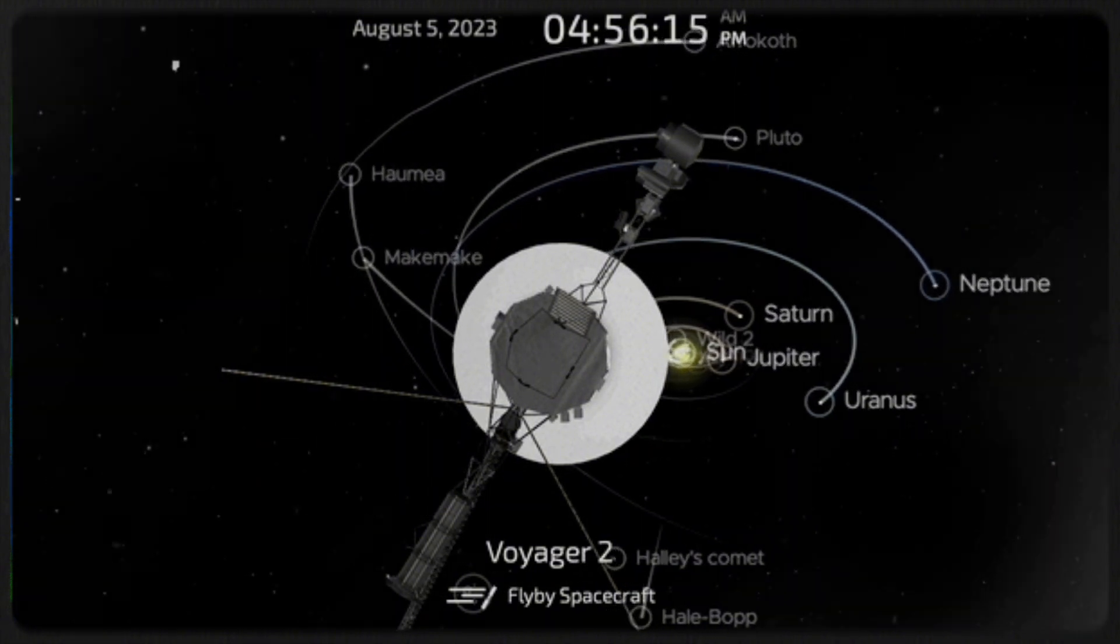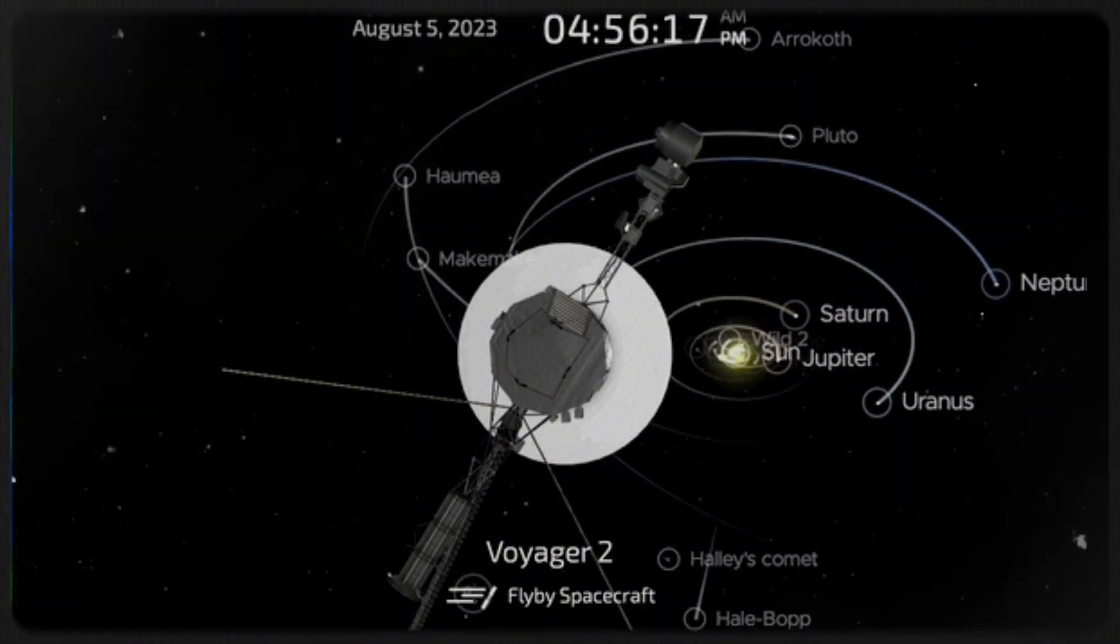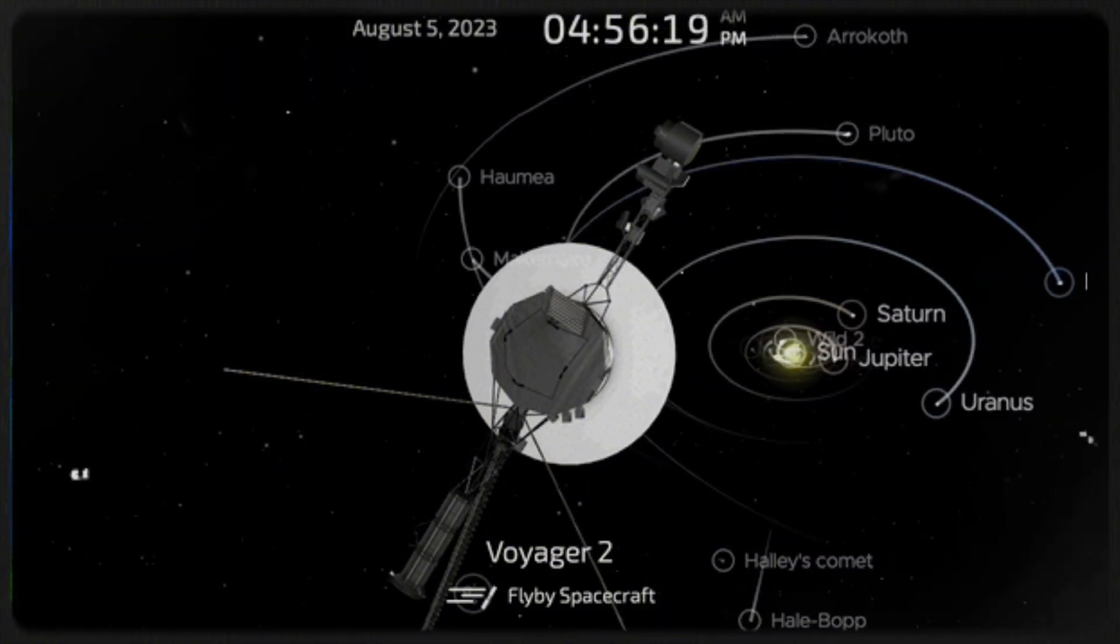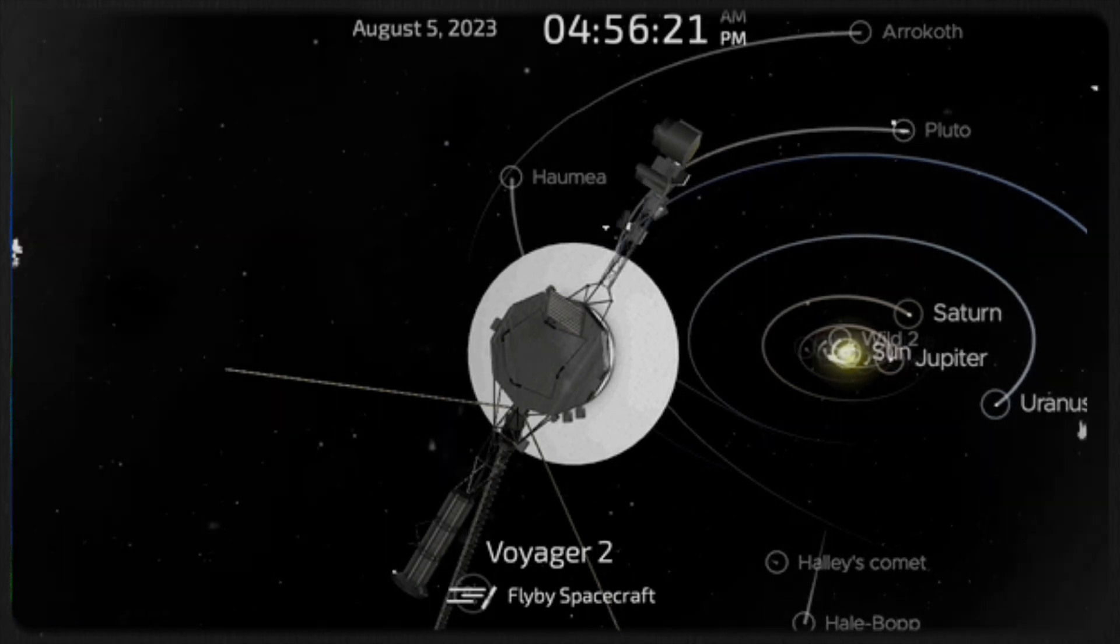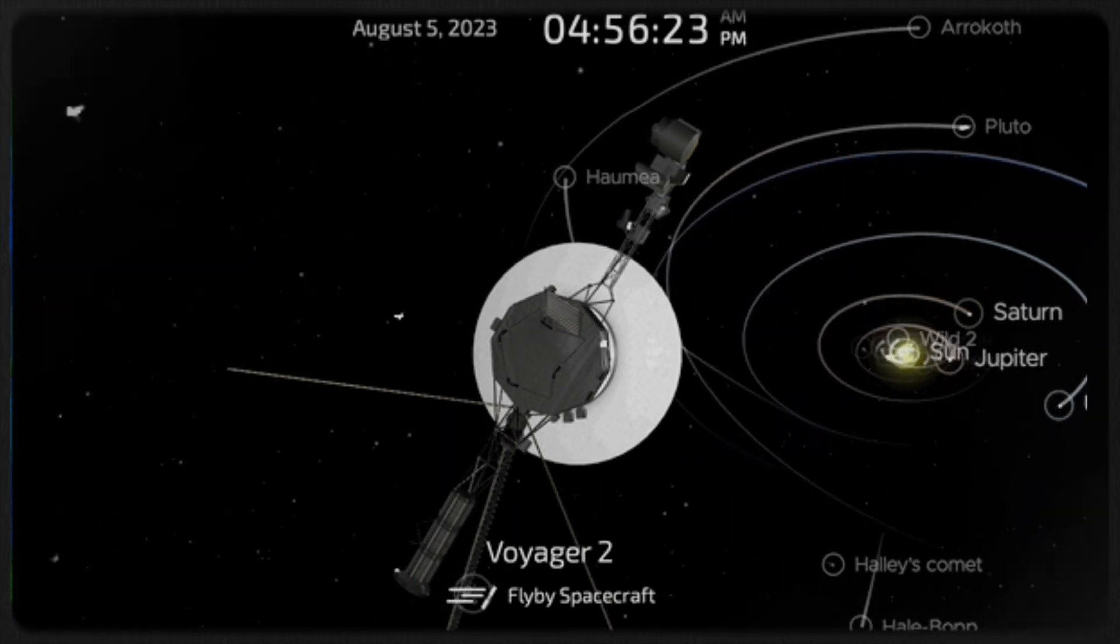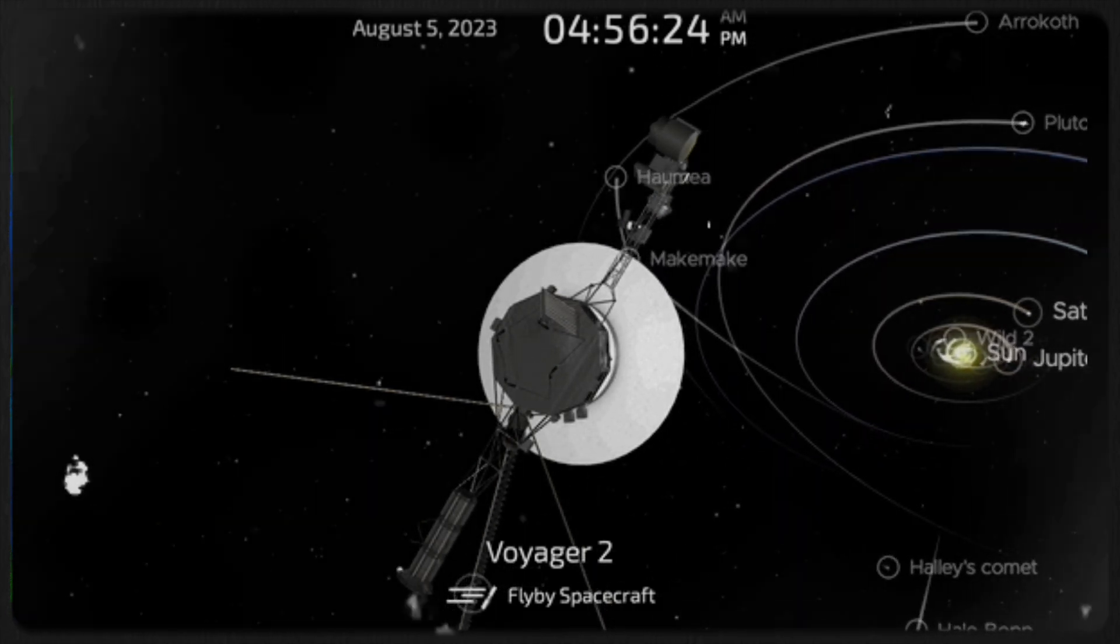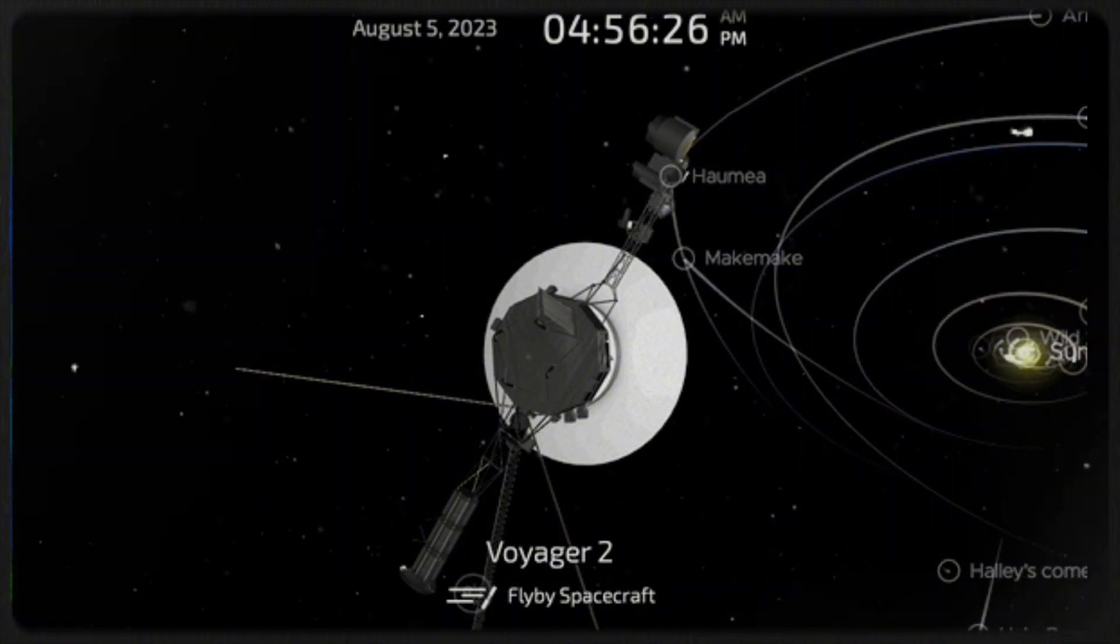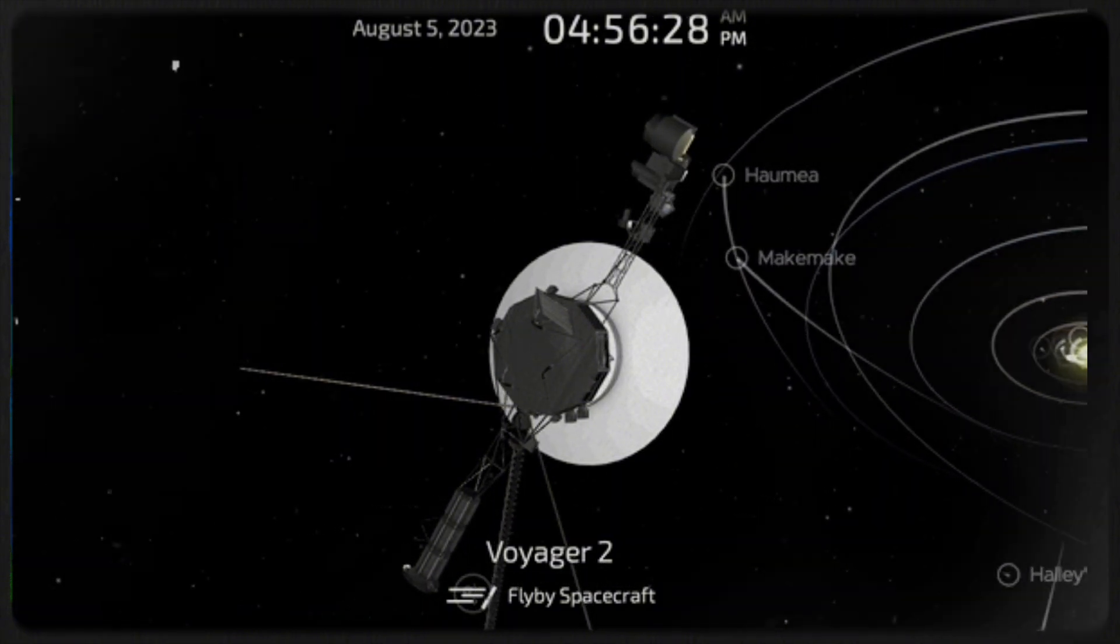The Voyager missions were designed to take advantage of a rare planetary alignment, allowing the spacecraft to slingshot from one planet to the next using gravitational assists. This clever navigation technique enabled the probes to reach their destinations more quickly and with less fuel.